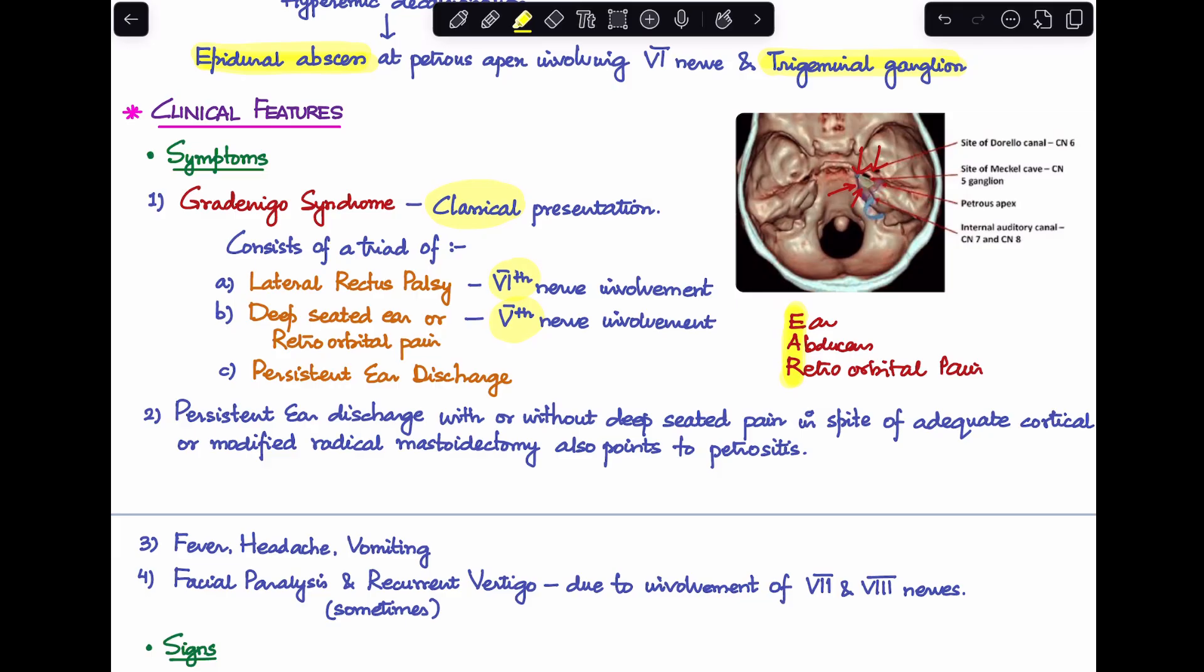Next, whenever we see a case of chronic otitis media which has come to you with persistent ear discharge with or without a deep seated pain, in spite of adequate cortical or modified radical mastoidectomy, you should definitely suspect petrositis. When a case of petrositis complicates further, it can even cause fever, headache, vomiting, and even facial paralysis and recurrent vertigo because of involvement of the seventh and eighth nerves.